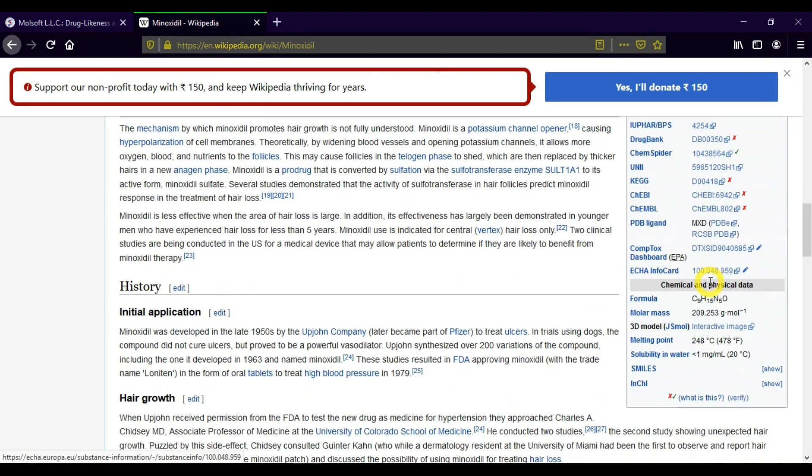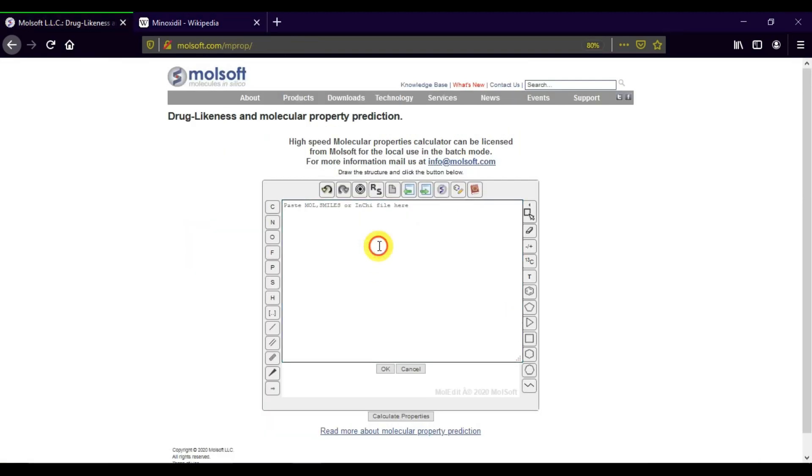Before that, let us have some details of the drug. It is a medication used for male pattern hair loss. Let's copy the SMILES. Scroll down and you can find the SMILES over here. Click show and copy the SMILES. Now we will paste it in our Molsoft, and then click OK.